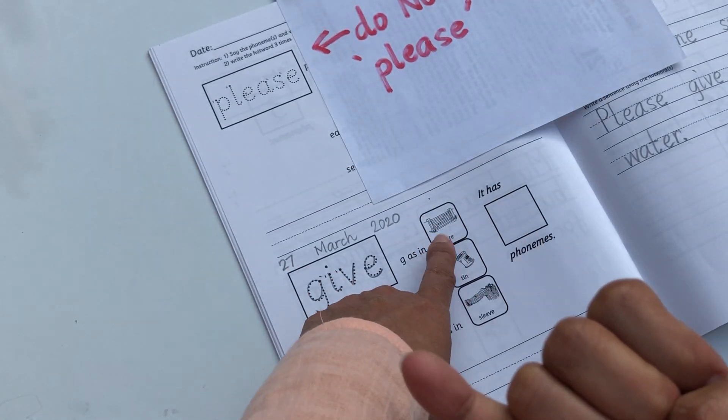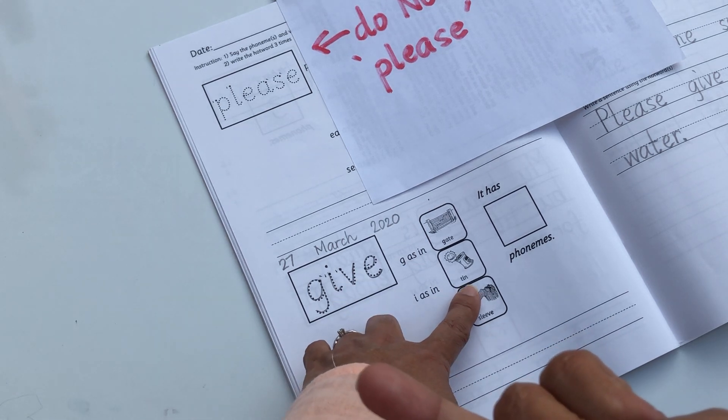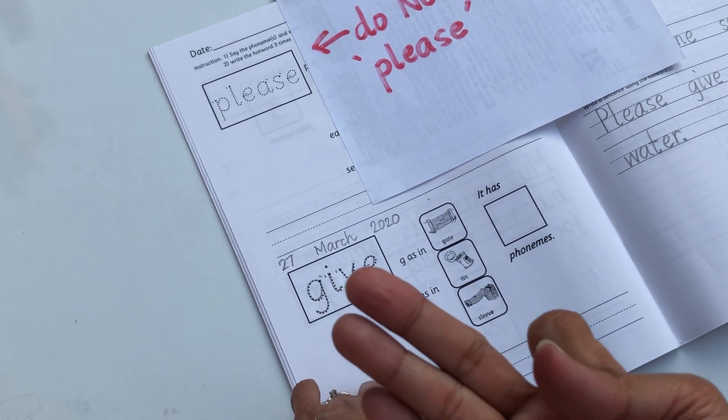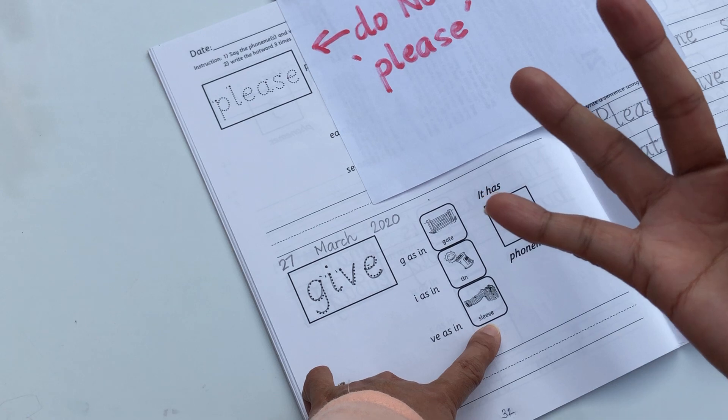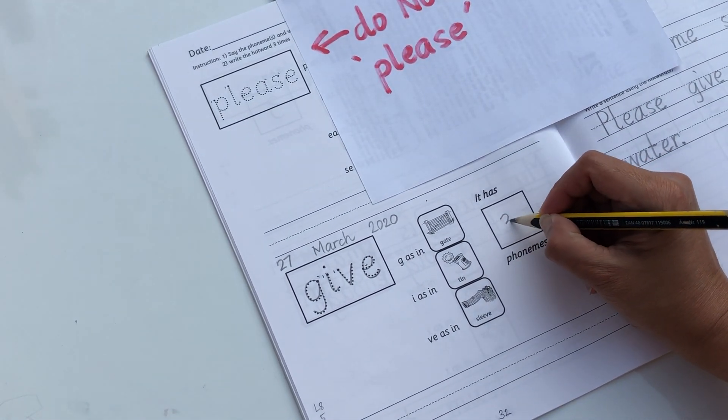G as in the g in gate, i as in the i in tin, and v as in the v in sleeve. So you hear three phonemes.